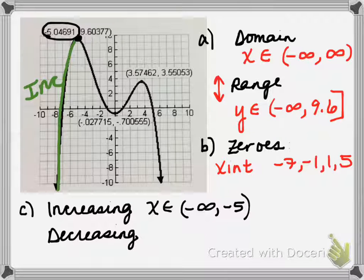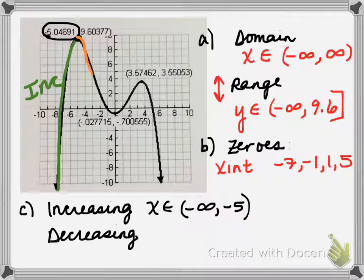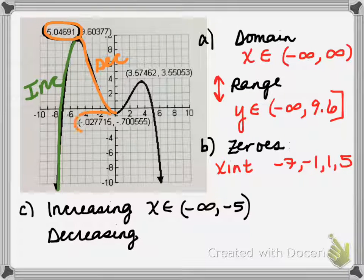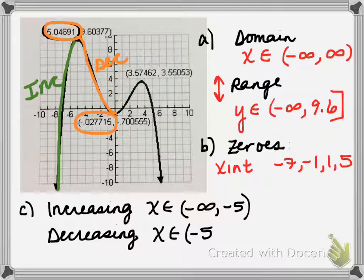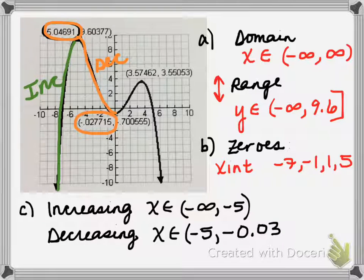So the graph increases from negative infinity to negative 5. Then, continuing from left to right, the y values are getting smaller, so this is a decreasing portion. We're decreasing from negative 5 to the x value of this next low point. This graph was made on a graphing calculator, which is why there are decimals. So the graph is decreasing on the interval from approximately negative 5 to approximately negative 0.03.